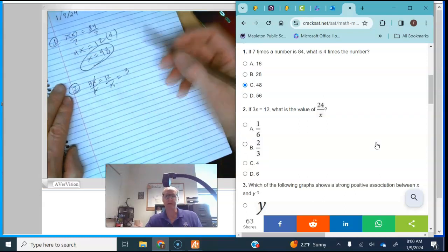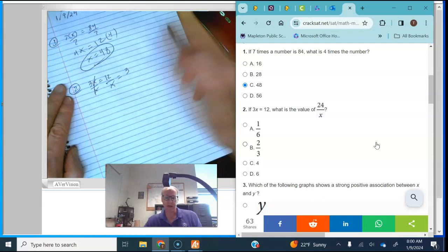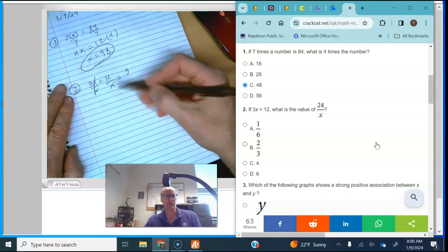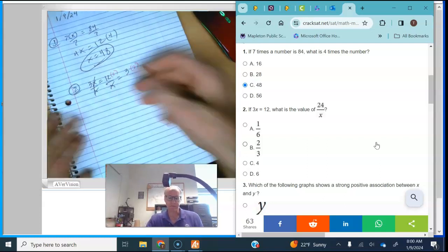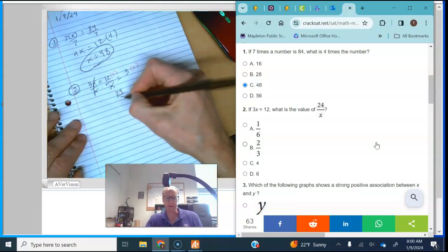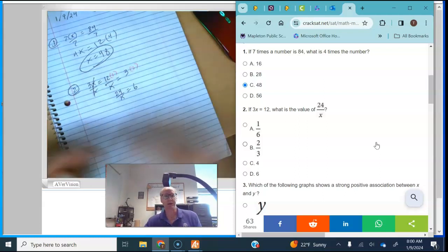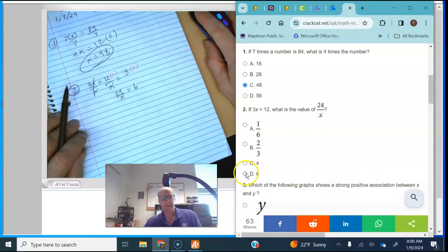But what I want is 24 over x. So how do I make this look like 24 over x? And what I do is I multiply by 2 and sure enough I get 24 over x is equal to 6 and I'm all done. That's solving for an expression.